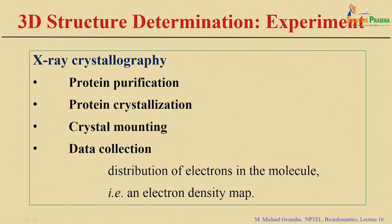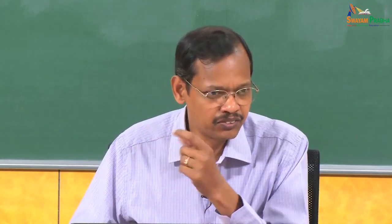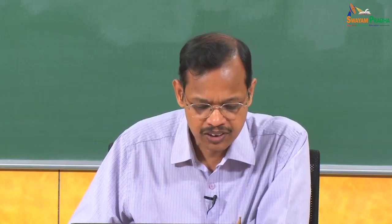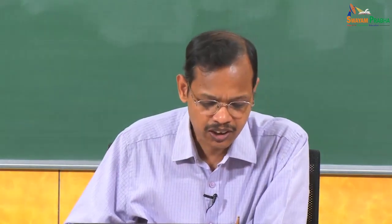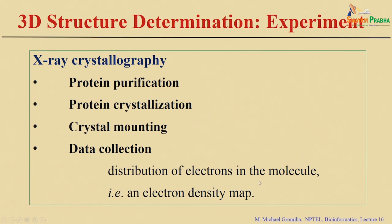Once all these steps are done, you pass X-rays through the crystal and get the diffraction pattern. The diffraction pattern represents the distribution of electrons in the molecule — how electrons are positioned in the molecule and how they are diffracted. This gives you what is called an electron density map, showing the population of electrons in the crystal.